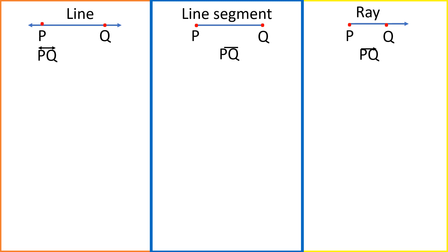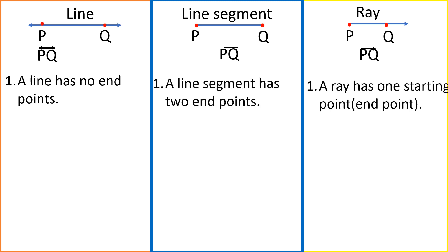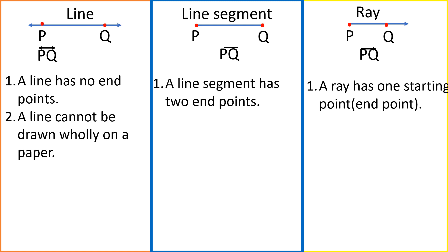Now what is the difference between all of them? First, a line has no endpoints — it can be extended in both directions. A line segment has two endpoints. A ray has only one endpoint, which is its starting point — P in this case.